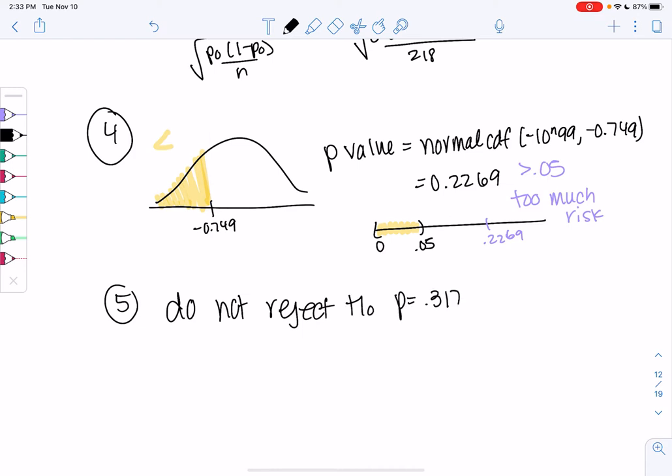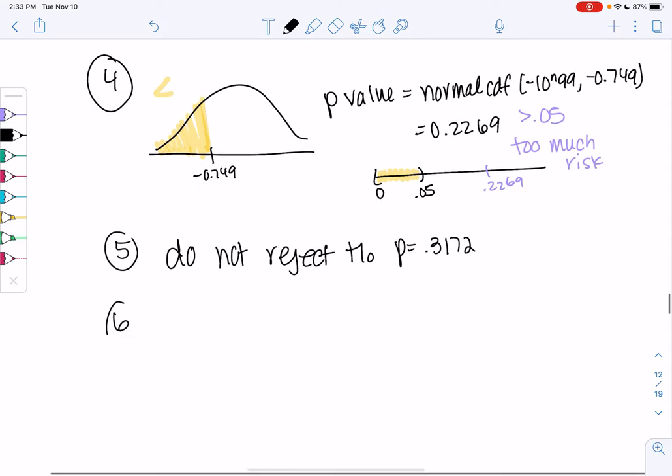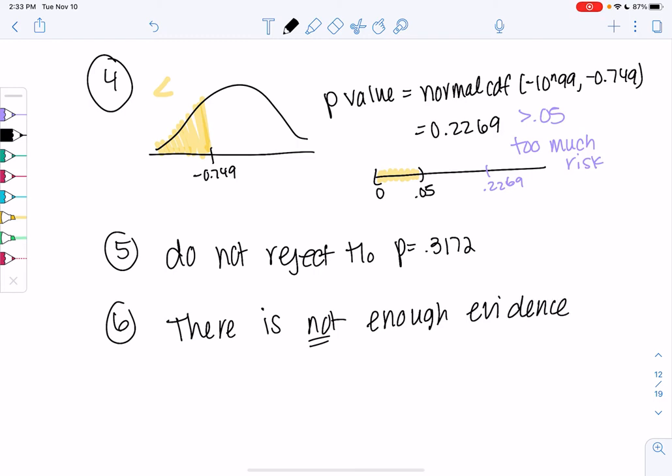So we're not rejecting that the proportion is the same. It could still be equal. So instead of saying there's strong evidence, we'll say there's not enough evidence, or there is not strong evidence at 5% to show marijuana abuse has decreased. So basically we were not able to reject the equal case, so that means we can't prove H1, which is P is less than 0.3172. There's not enough evidence to show marijuana abuse has decreased for 12th graders.